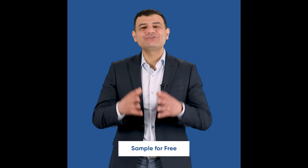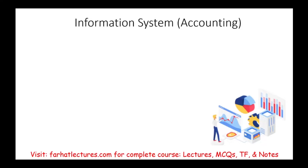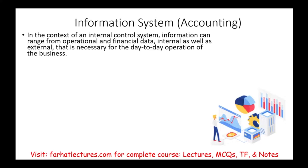Start your free trial today. In the context of the internal control system, information can range from operational and financial data, internal as well as external, that is necessary to help run the company on a day-to-day basis. We need an information system to run the company and to communicate with our suppliers, vendors, and customers.